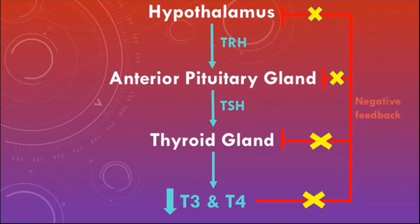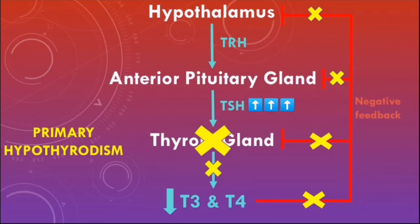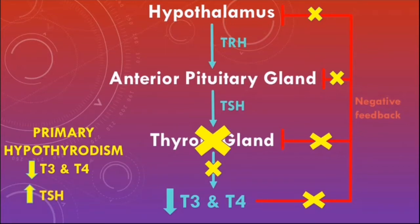Primary hypothyroidism refers to conditions which affect the thyroid gland's ability to produce thyroid hormones. Even though there are low levels of T3 and T4 in the blood, there is a compensatory increase in TSH production due to the loss of negative feedback. So primary hypothyroidism is characterized by low levels of free T3 and T4 and high levels of TSH.